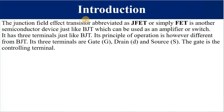The junction field effect transistor, abbreviated JFET or simply FET, is another semiconductor device, just like the bipolar junction transistor. It can also be used as an amplifier and as a switch. The JFET has three terminals, just like the BJT, and these three terminals are known as the gate (symbol G), the drain (symbol D), and the source (symbol S). The controlling terminal is the gate terminal.